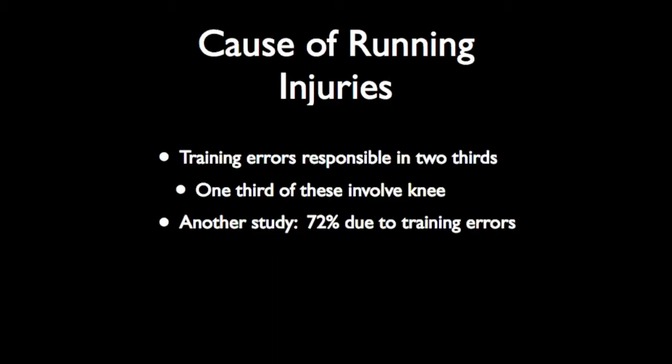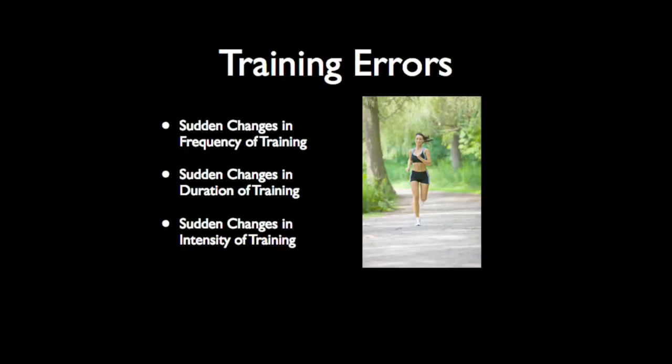So what about the causes of running injuries? In two different studies, training errors were responsible for two-thirds of the injuries we see in runners, and one-third of those involved the knee. In another study, 72% of injuries were due to training errors. The most common training errors are sudden changes in the frequency of training — somebody getting ready for a race and really ramping up their speed or distance — changes in duration, and changes in intensity, maybe going from flats to hills.